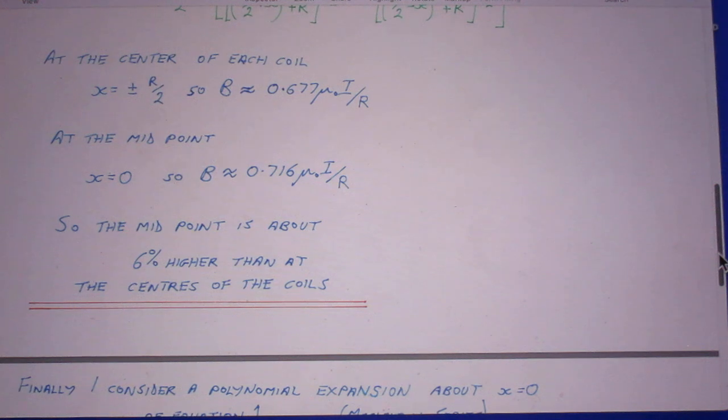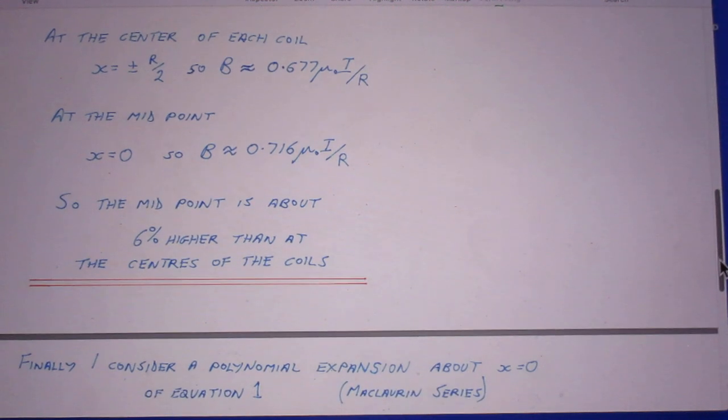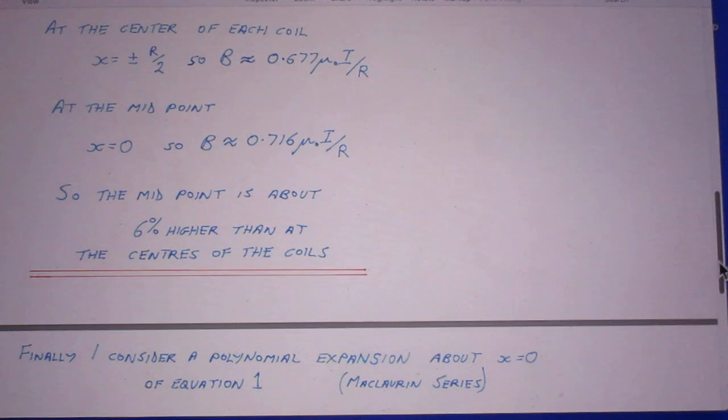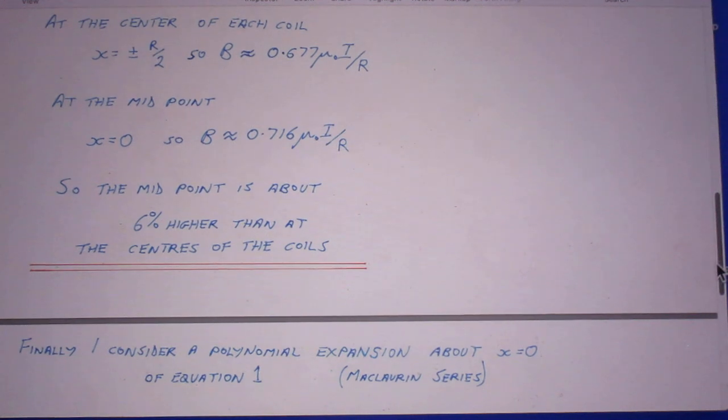If he puts in x equals zero, then he finds something that's pretty close, only six percent different. It's only six percent higher than at the centers of the coils.